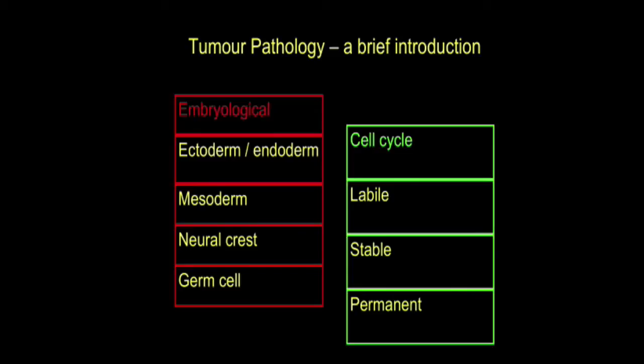As far as the cell cycle is concerned, we can divide the body's cells into three broad groups, which is very relevant and useful in thinking about tumours in general. The first is called the labile cell group — a cell population which, even in the adult, is constantly turning over. The skin is a good example, where we're losing skin cells from the surface but replenishing them from the basal part of the epithelium. The gut is another good example, where the gut lining is continually shed but new cells are formed from the crypts and glands.